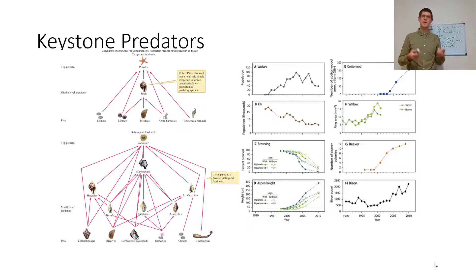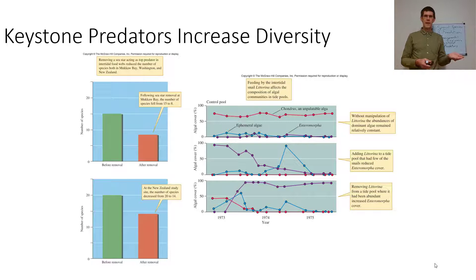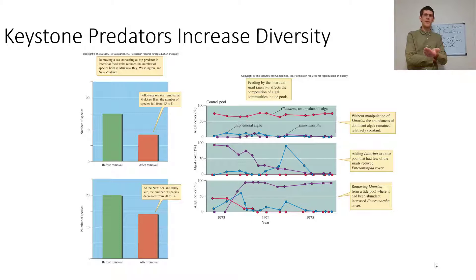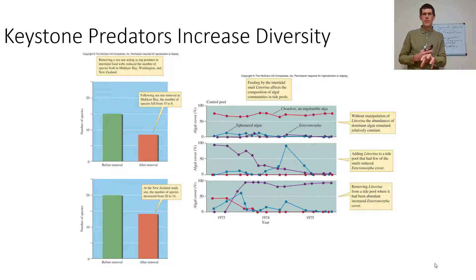That's a disproportionately large impact given their biomass — increasing diversity. In the absence of Litoria, a type of intertidal snail, you get too much Chondrus, an unpalatable algae. Without manipulation, the non-palatable algae ends up dominating. Adding Litoria is going to reduce the Enteromorpha cover and change the presence and absence of different covers. Removing it from the tide pool is going to increase the palatable algae. So you change the interspecies interactions of algae when you introduce or remove different types of snails.